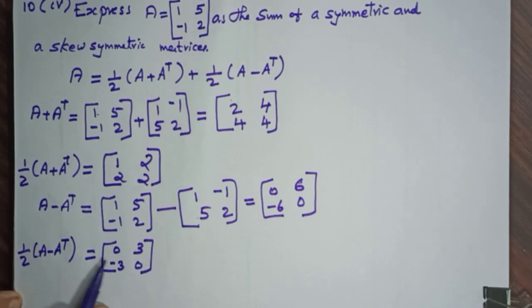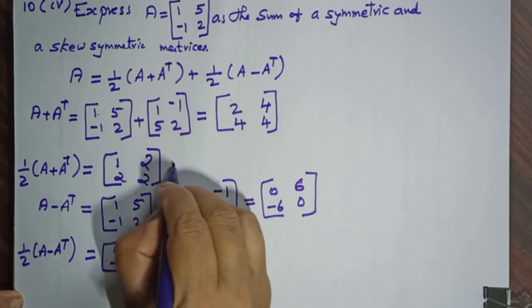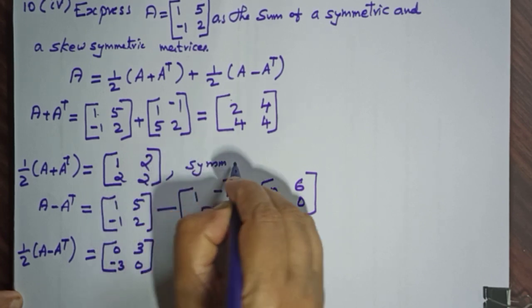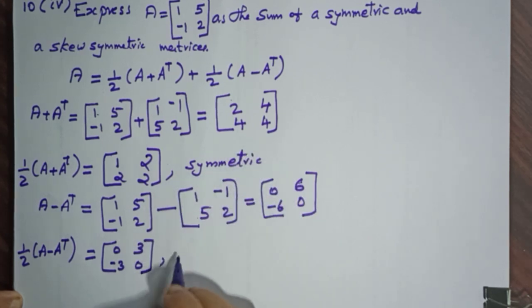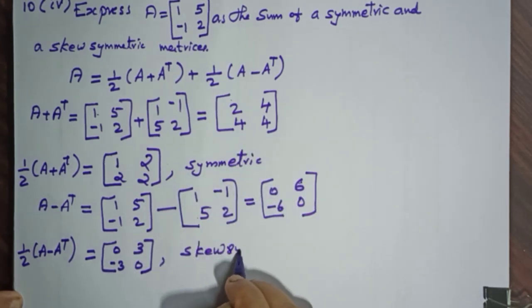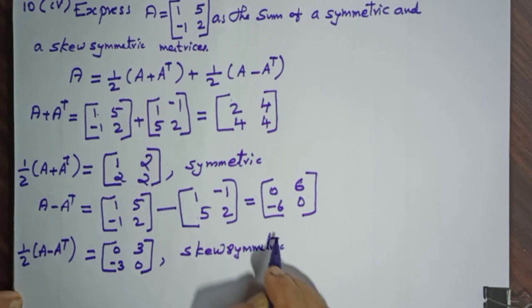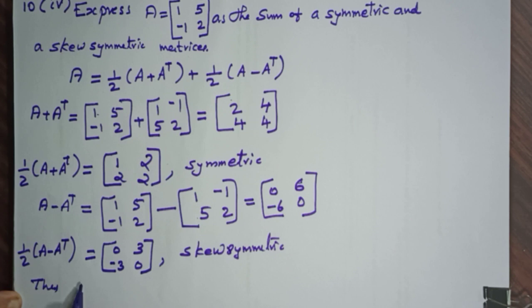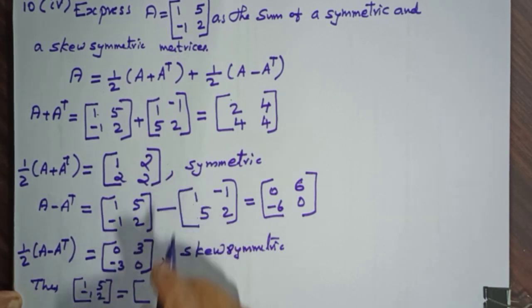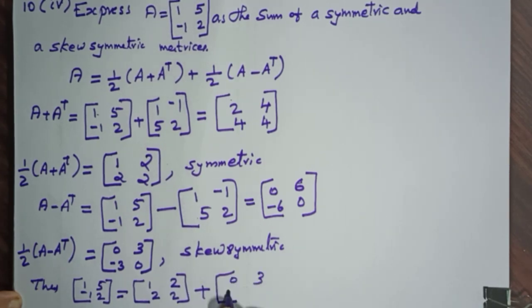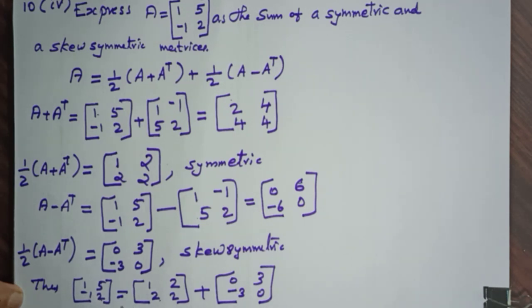So half of A plus A-transpose is symmetric and half of A minus A-transpose is skew-symmetric. Therefore matrix (1, 5 / −1, 2) equals the symmetric matrix (1, 2 / 2, 2) plus the skew-symmetric matrix (0, 3 / −3, 0). You can verify: 1+0=1, 2+3=5, 2+(−3)=−1, 2+0=2. The first is symmetric and the second is skew-symmetric.